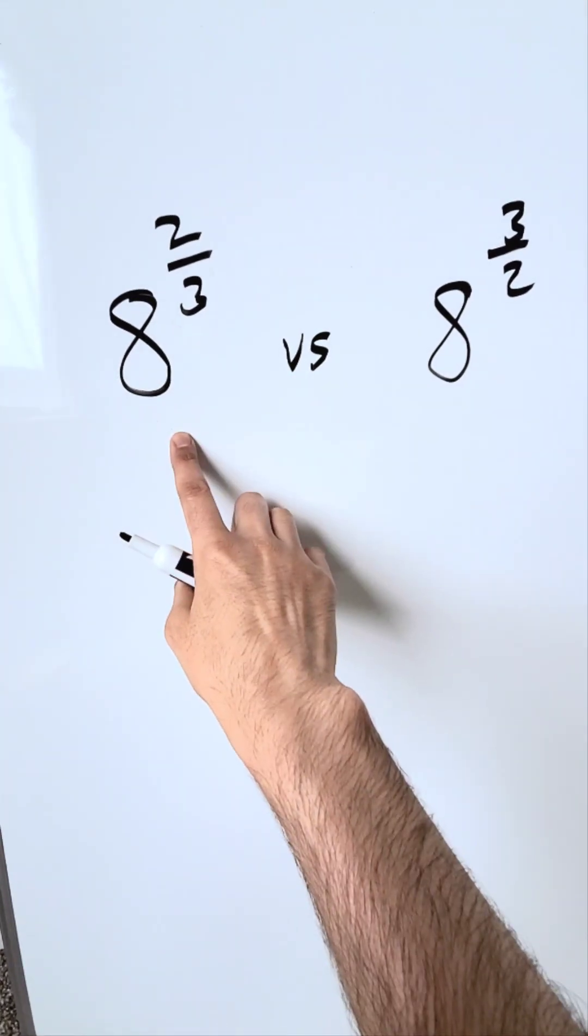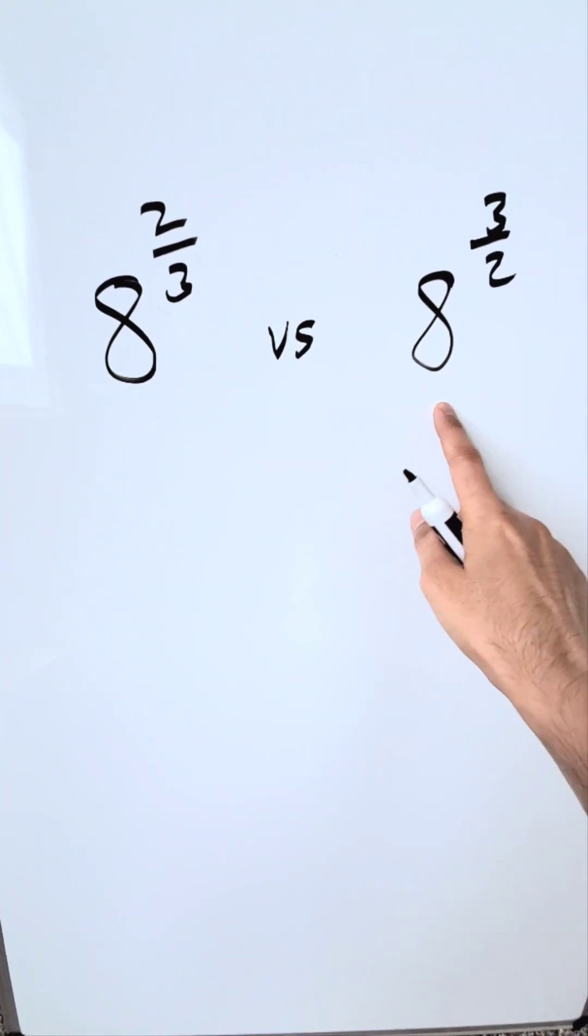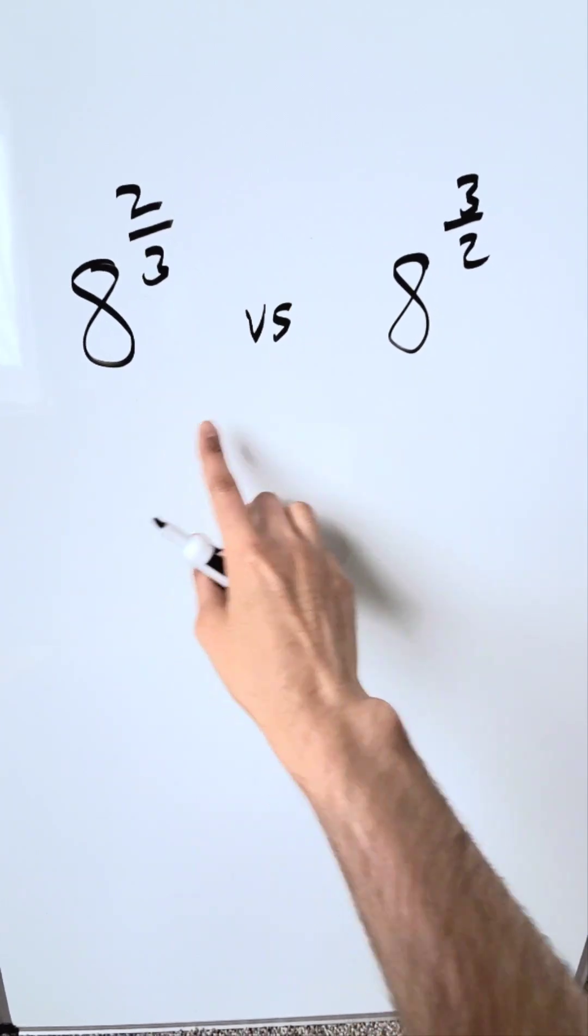Let's evaluate both of these terms. I have 8 exponent 2 over 3 and 8 exponent 3 over 2. One of these is easy, the other one is not.